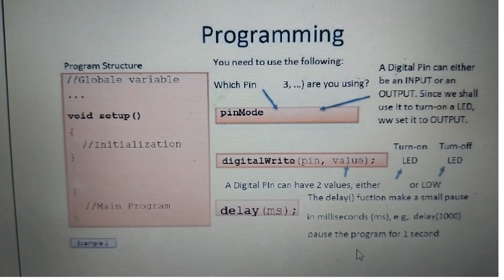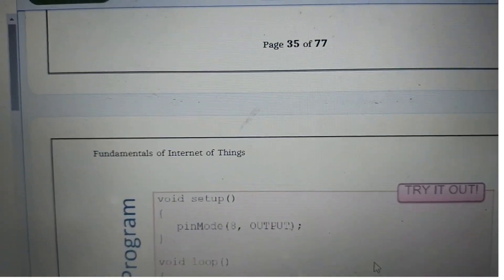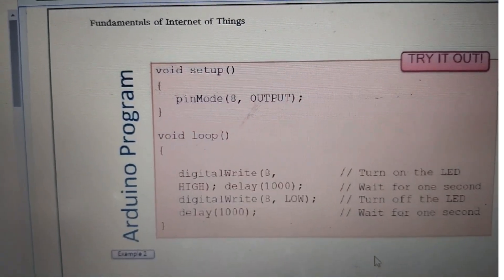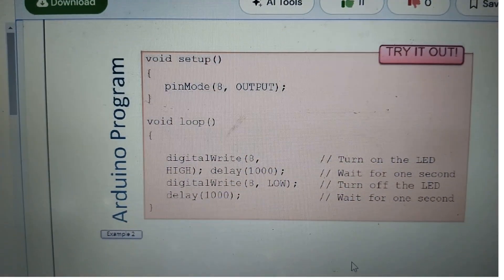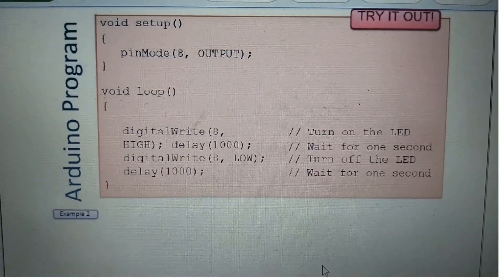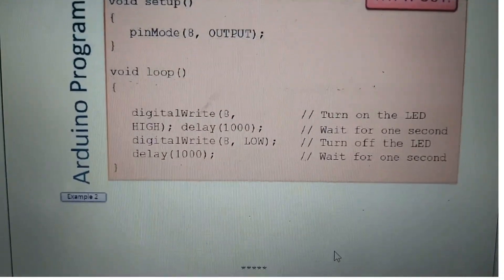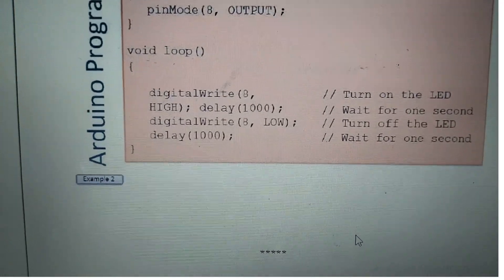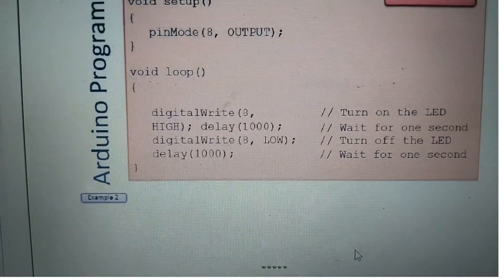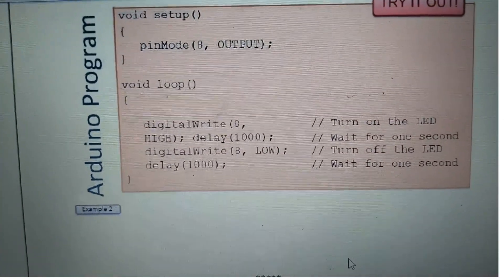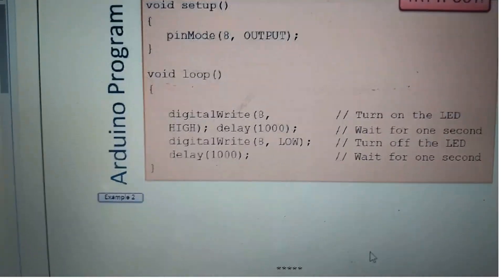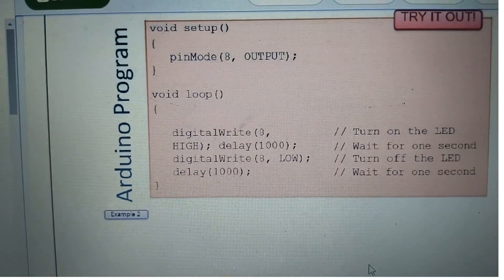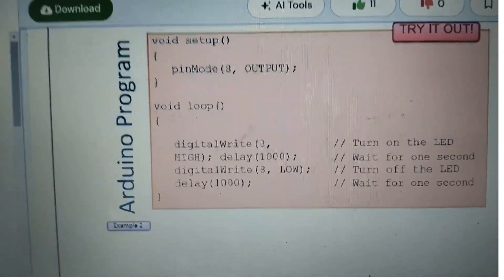We'll see an Arduino program example. void setup, pinMode 8 comma output. In the loop, digitalWrite 8 high - high means turn on the LED. delay 1000 - wait for 1000 milliseconds, which is one second.